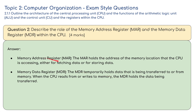Question two — memory address register: the MAR holds the address of the memory location that the CPU is accessing, either for fetching data or for storing data. The MDR temporarily holds data that is being transferred to or from memory. When the CPU reads from or writes to memory, the MDR holds the data being transferred.